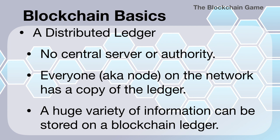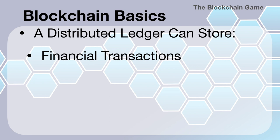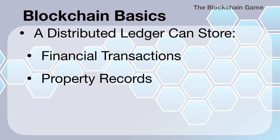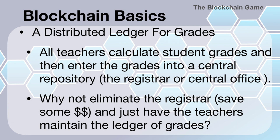I then mention that a huge variety of information can be stored on a blockchain ledger. It can store financial transactions — I usually give a couple of examples. Property records, with examples about houses and transferring property. Shipments and inventory is another example of something a distributed ledger could store. And then I ask the question: well, why couldn't we store grades on the blockchain?